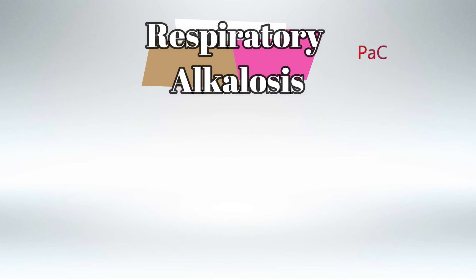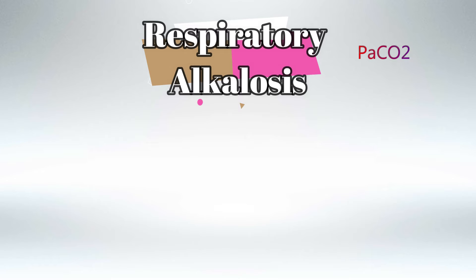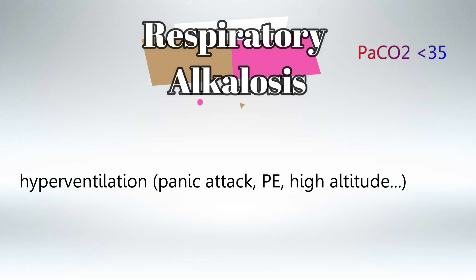Respiratory alkalosis is defined as pressure of arterial carbon dioxide less than 35. Carbon dioxide is acidic, so the less we have of it, the more alkalotic the blood is going to become. We see respiratory alkalosis in cases of hyperventilation, because rapid breathing will expel all the carbon dioxide from the blood.